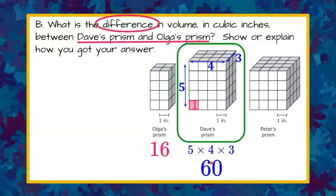Now we're not done because we were asked to find the difference in volume. We're going to take Dave's prism of 60 and subtract Olga's prism of 16. To do this, we can't take 6 from 0, so we're going to borrow from the 6. Cross out the 6, take 1 away, it becomes 5, and add the 1 to the 0, making this 10.